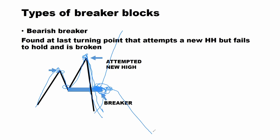Because why are we calling it bearish? Because at this point, when the market retests, we expect to be looking for bearish moves — we start looking for sell moves. Now let's look at what will actually qualify this as a Breaker Block, because it doesn't simply mean that once it is broken, the market is going to come retest and continue down. We're going to be looking at the conditions.